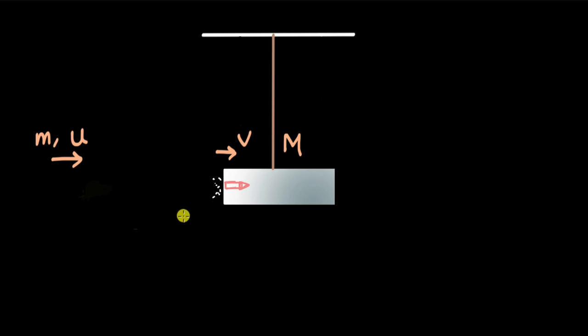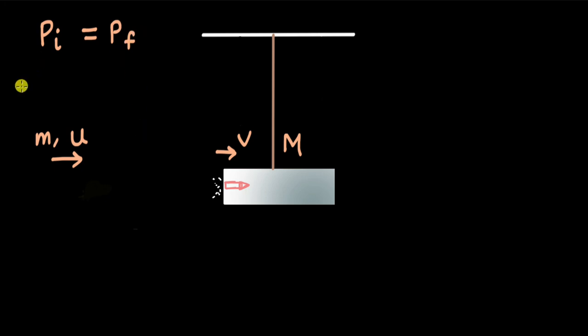In this collision, when the bullet strikes the block, there is one quantity that is conserved in every collision — whether elastic or inelastic — and that is momentum. The momentum of the bullet-and-block system is conserved. Mathematically, the initial momentum p_i equals the final momentum. The initial momentum is only that of the bullet, which is m times u.